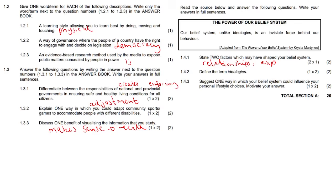Question 1.4.2: define the term ideologies. Ideologies, in summary, are ideas that define a particular group of people, which may refer to political, social, or economic ideas. They are principles that are inherent to a group of people — ideas that are somewhat esoteric, defining a specific group of individuals.